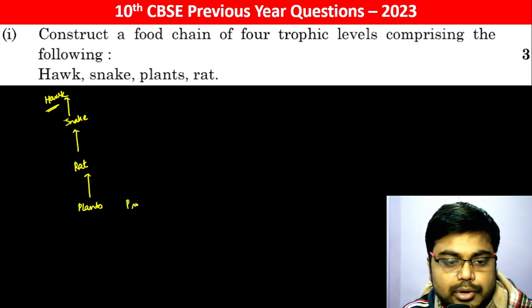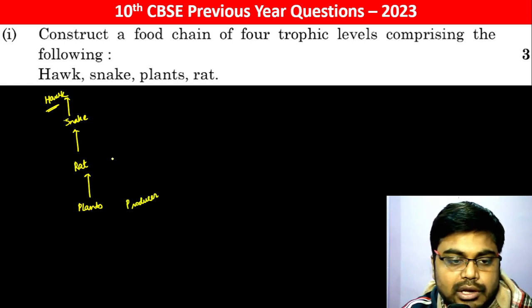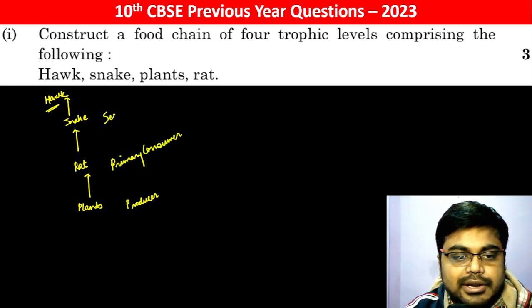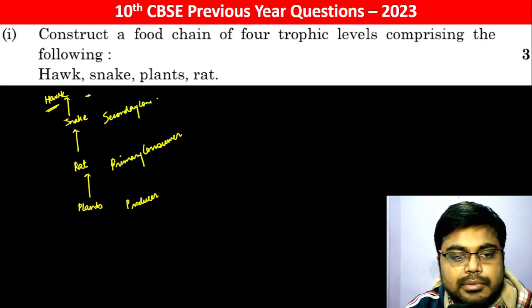The first level is the producer, the second is the primary consumer, the third is the secondary consumer, and the fourth is the tertiary consumer.